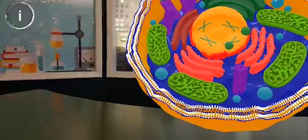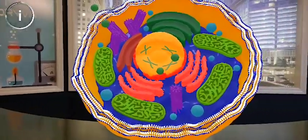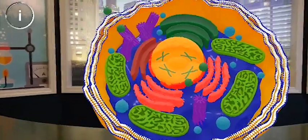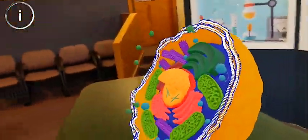The vesicles are like little transport trucks, moving everything that needs to be moved in the cell. That ranges from the proteins and chemicals created by the endoplasmic reticulum to the waste that other parts of the cell create.